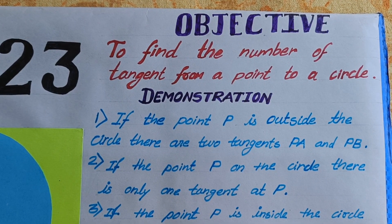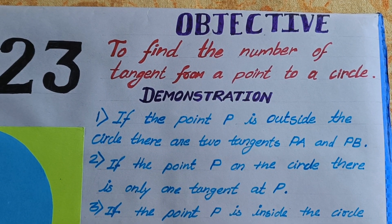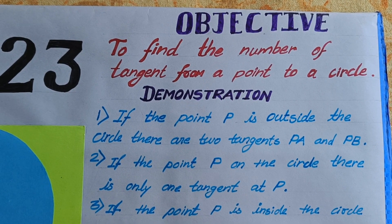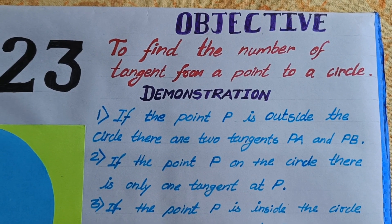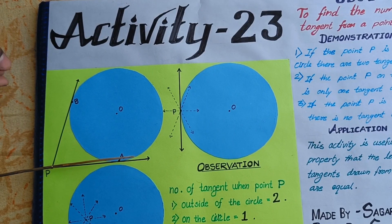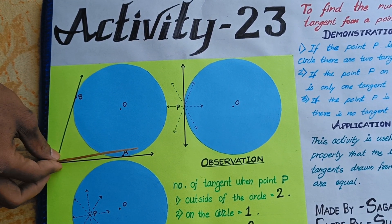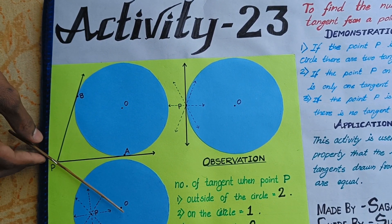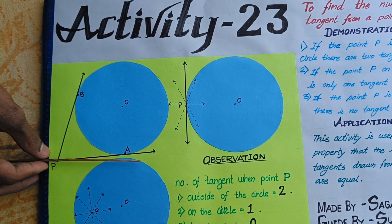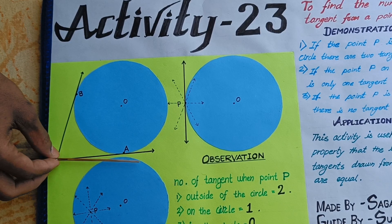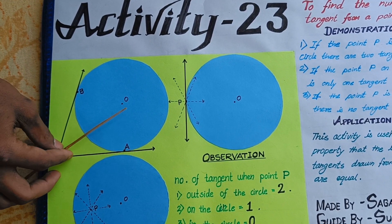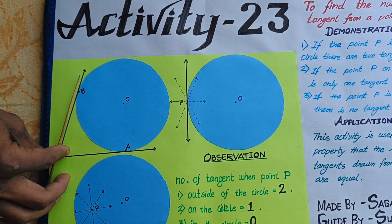The objective of this activity is to find the number of tangents from a point to the circle. In the first circle, when point P is outside the circle, we draw two tangents: tangent PA and second tangent PB.